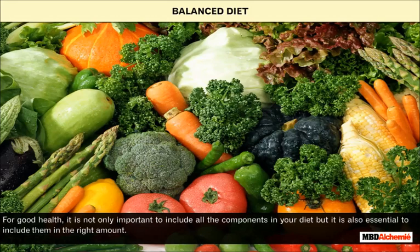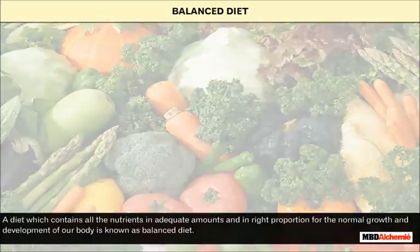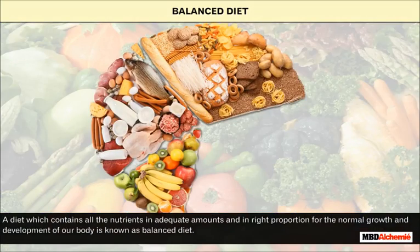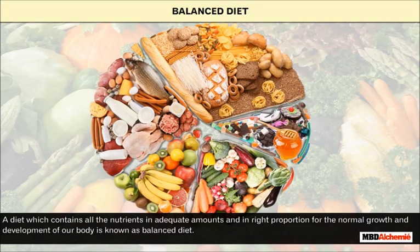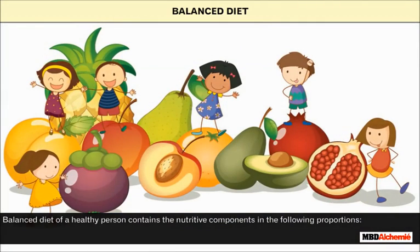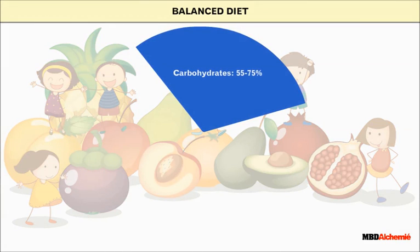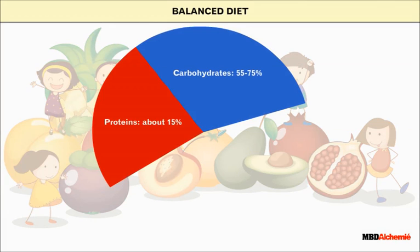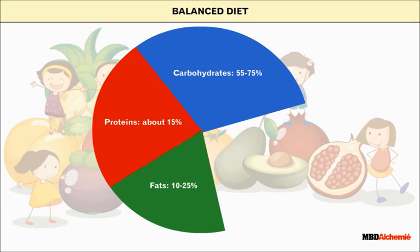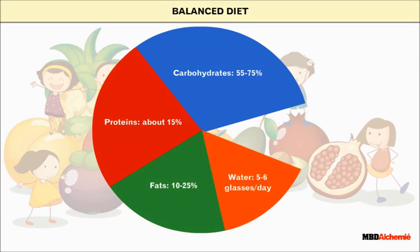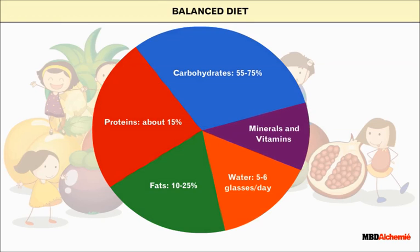Balanced diet: for good health, it is not only important to include all the components in your diet, but it is also essential to include them in the right amount. A diet which contains all the nutrients in adequate amounts and in right proportion for the normal growth and development of our body is known as balanced diet. A balanced diet of a healthy person contains carbohydrates at about 55 to 75 percent, proteins at about 15 percent, fats at 10 to 25 percent, water at 5 to 6 glasses per day, and minerals and vitamins to be taken in small amounts.